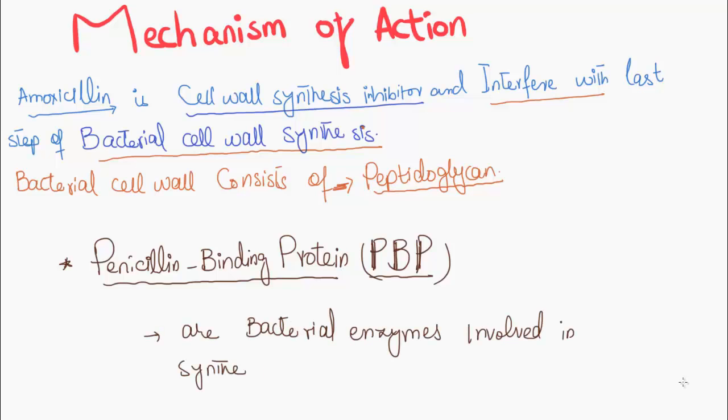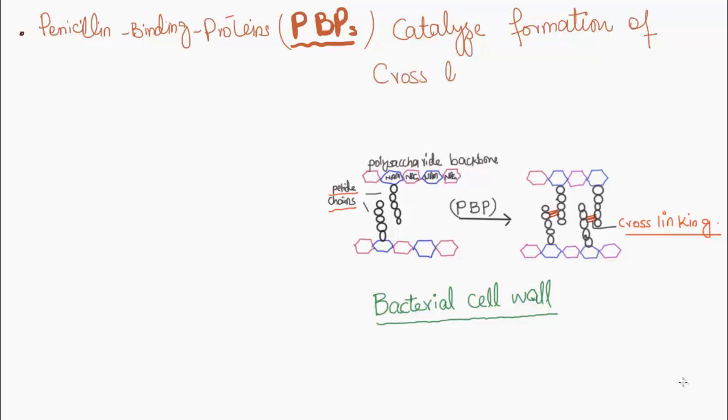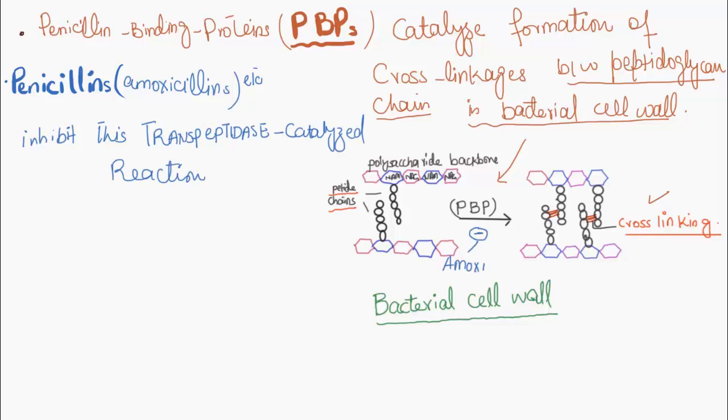Penicillin-binding proteins are bacterial enzymes involved in cell wall synthesis. Some penicillin-binding proteins catalyze formation of cross-linkages between peptidoglycan chains in bacterial cell wall. Penicillins like amoxicillin inhibit this transpeptidase-catalyzed reaction, thus inhibiting the cross-linking and disrupting cell wall integrity.